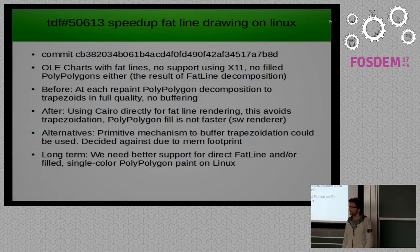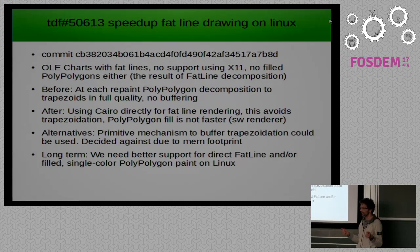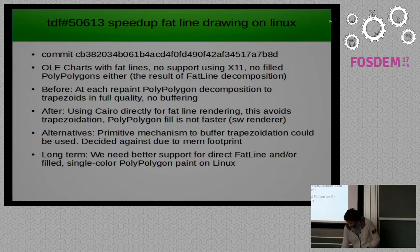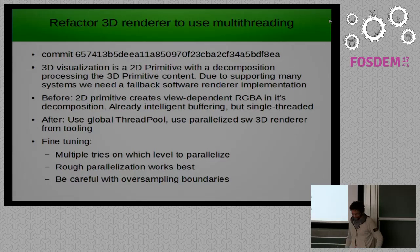This example also has the problem that the geometry information has to come somehow from the 2D charts to the edit fuse at all. There is a bridge now which directly uses the primitive representation. Before that, even metafiles were used for that.